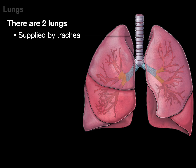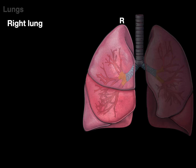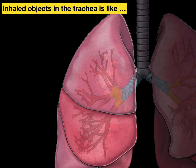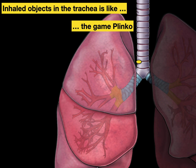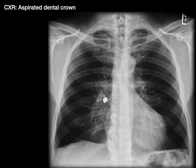There are two lungs supplied by the trachea. If the trachea is blocked, no air gets in or out of either lung. The right lung is supplied by the right primary or main stem bronchus, which is more vertical, shorter, and wider than the left primary bronchus. That's why an inhaled object in the trachea — like the game Plinko — typically goes down the right primary bronchus because it's more vertical, shorter, and wider. An inhaled object can often be found in the right lower or right middle lobe depending on its size. For example, in this chest X-ray, there is an aspirated dental crown located down the right primary bronchus.